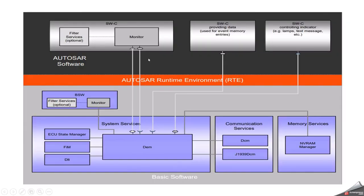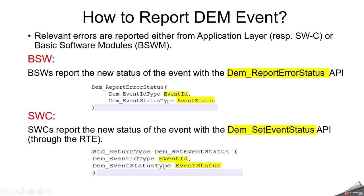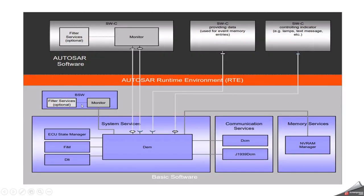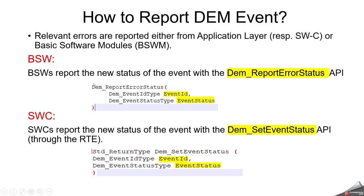As shown in the picture, when the application software component wants to report an event to DEM, it has to use the API called Dem_SetEventStatus. But if the BSW module wants to report a fault to DEM, then it has to use Dem_ReportErrorStatus. During the call, we have to pass two arguments: one is event ID and another one is event status. Event ID is unique per event.